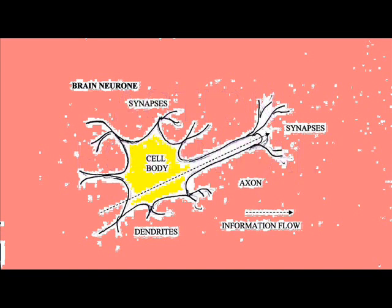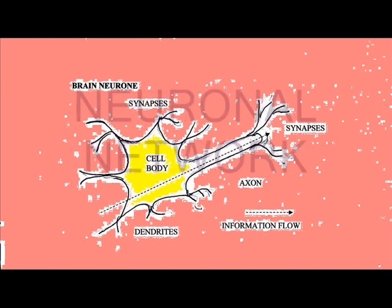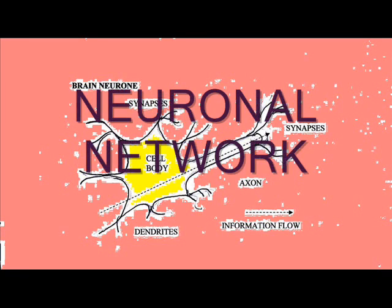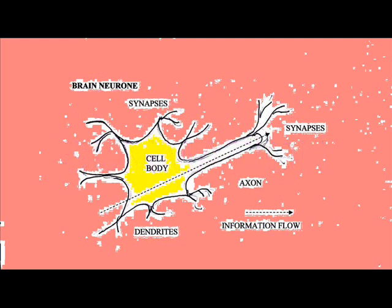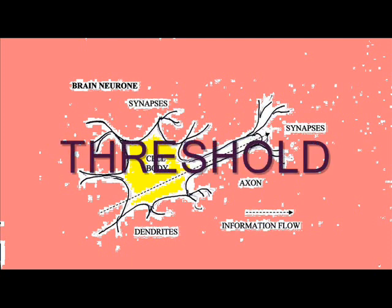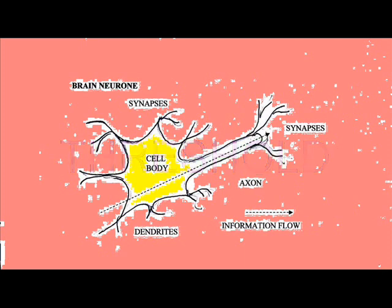These neurons form a richly connected neuronal network. There is a summation of information from neighboring cells. The electrical signal must reach a certain threshold before it can be passed on to the next neuron.